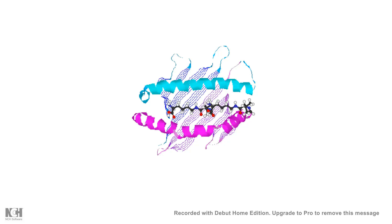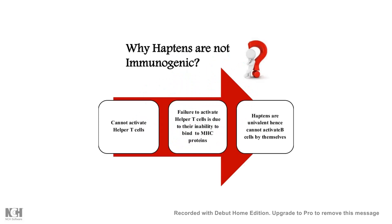Peptides derived from pathogens, which have a length of 16 to 18 residues, can easily bind to the MHC class 2 peptide binding groove and be presented to the T-cell or B-cell receptor. If they are able to activate T-cells, they elicit an immune response and are known as immunogens. Haptens alone cannot do that — they fail to bind to MHC and be presented to T-cells, so they are not immunogens by themselves.